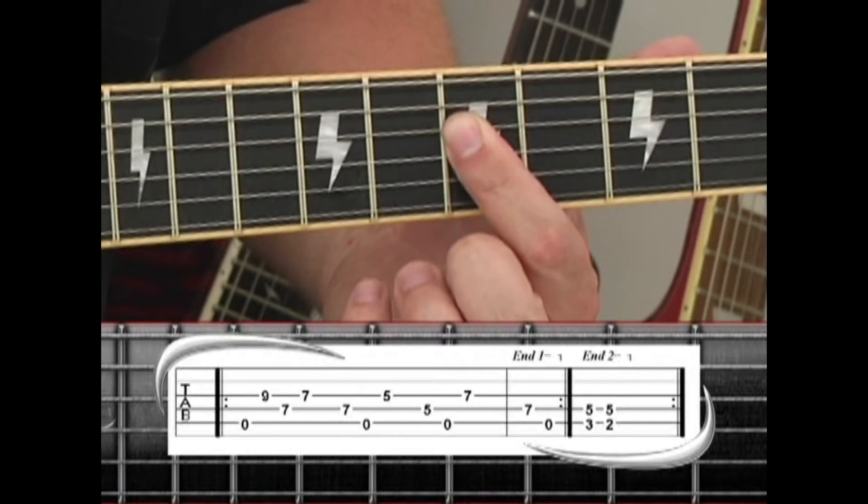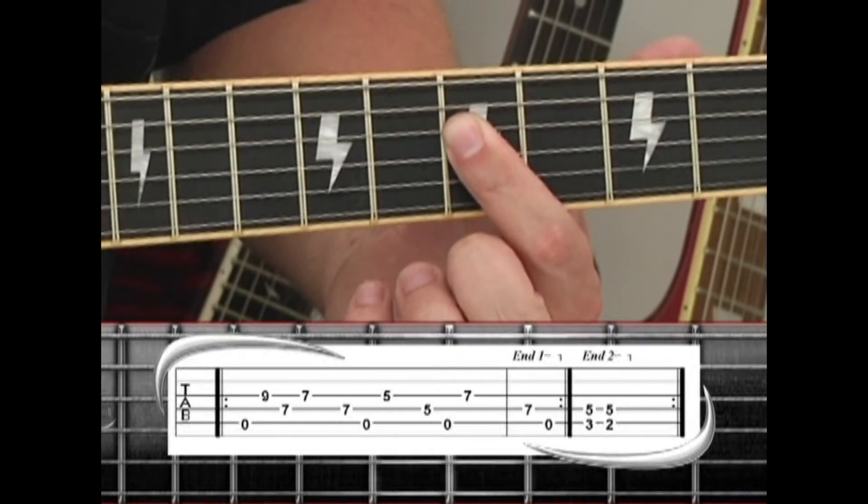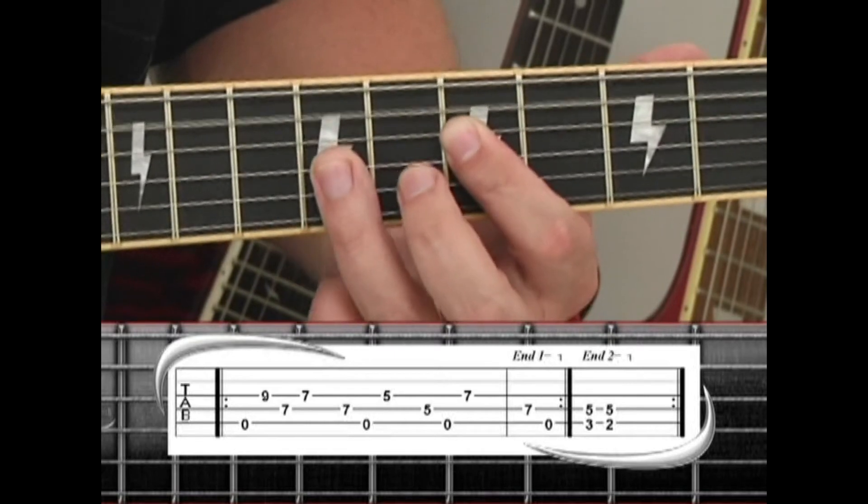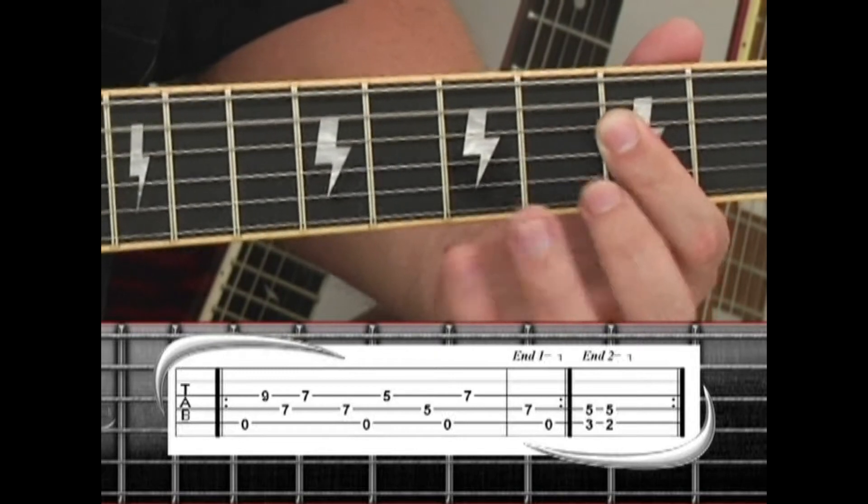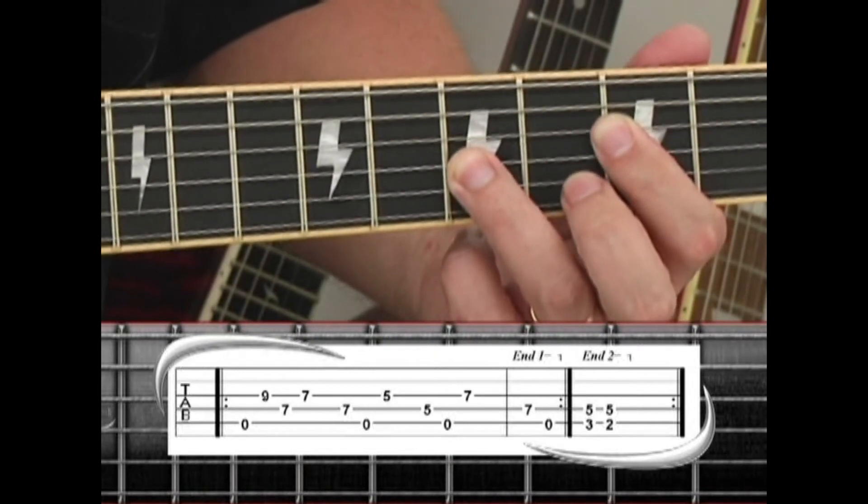For the first ending, play the fourth string seven, then the fifth string open. Repeat the riff, but for the second ending, play a C5 power chord.